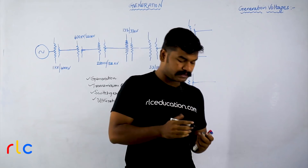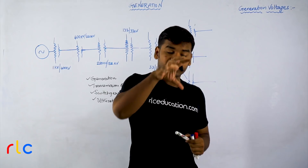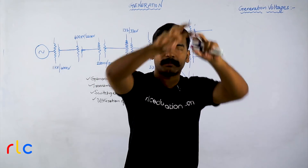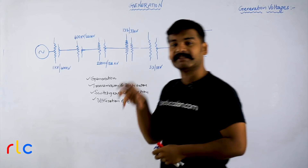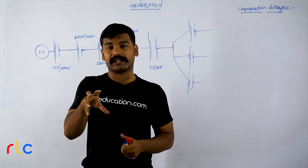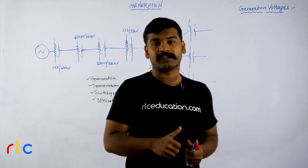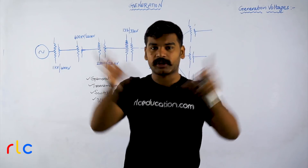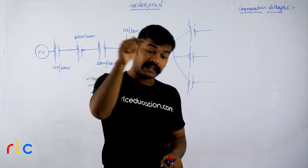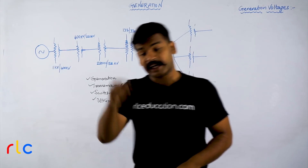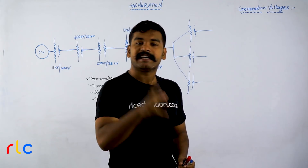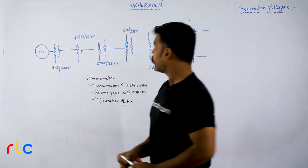The primary energy types a human requires are light, heat, and mechanical energy. The problem is that everybody requires this energy, but the resources are not available to everybody because they are unsymmetrically distributed across the globe. Due to this uneven distribution, it is essential to have a common link connecting all these energy sources and providing that energy to everybody.